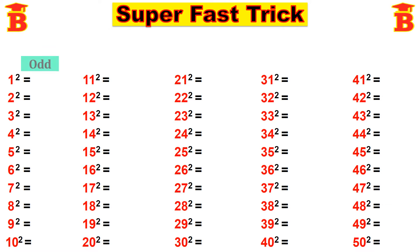The first step is to write odd numbers. We know the odd numbers: 1, 3, 5, 7, 9, 11, 13, 15, 17, 19.